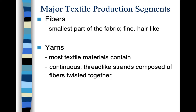We're going to break down Chapter One by what are called major textile production segments — the different stages of production from the first stage through to the last. We start with fibers because fibers are the smallest component of fabric. They're fine and hair-like. The easiest way to explain what a fiber is: think about a cotton ball. If you pull it apart, you'd pull out these little string-like fibers — those are the cotton fiber.